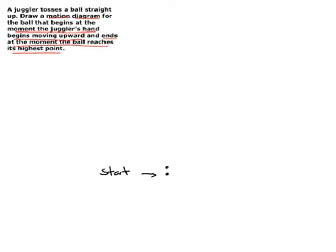Now we're going to make successive dots that represent the upward motion. Here's the big question: as the juggler's hand is pushing the ball upward, how does the spacing of the successive dots in the motion diagram change? Well, as the juggler's hand is pushing the ball upward, the ball is speeding up. So the points are going to get further and further apart, and the successive velocity vectors are getting bigger and bigger. The ball is speeding up as it's moving upward.